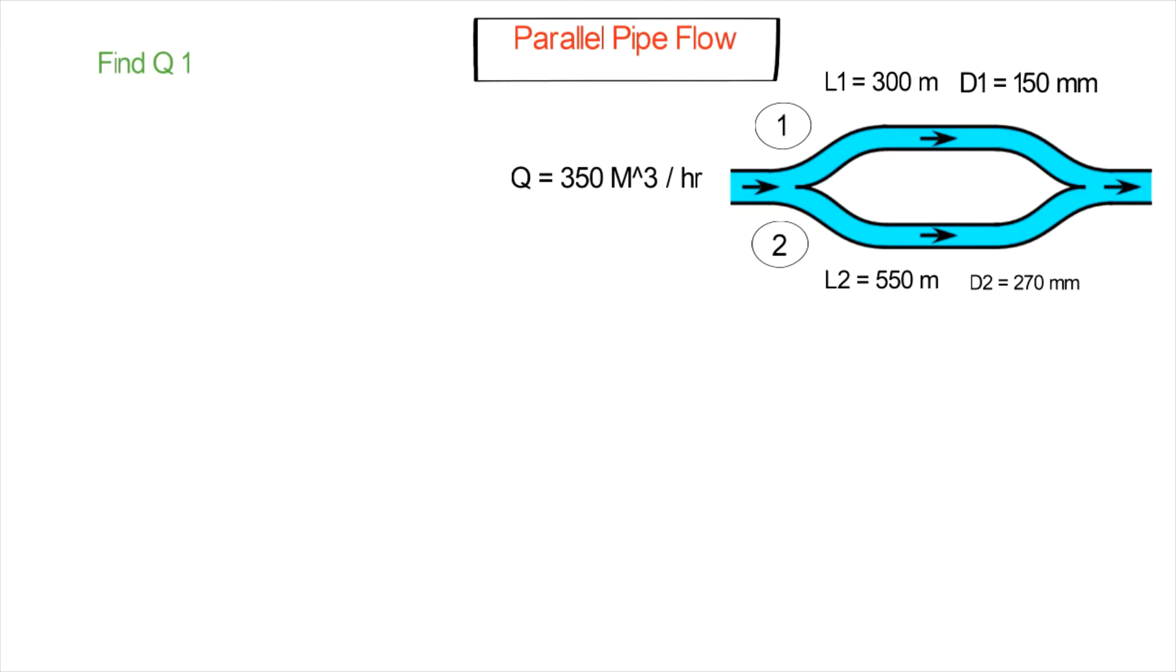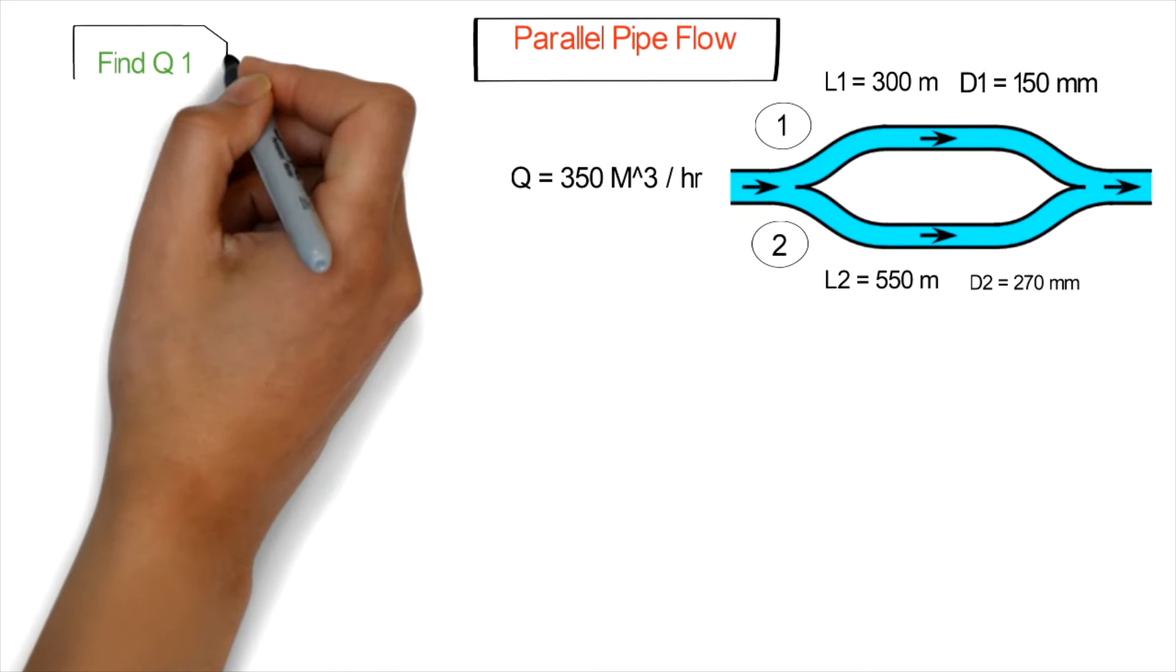The second assumption for parallel pipe systems is that the head losses are equal in each pipe. The head losses are equal in each pipe because if you look at the value of total head loss, it will be the difference between the pressure at the outlet minus the total pressure at the inlet.